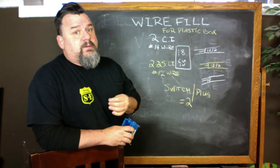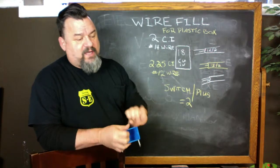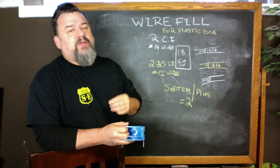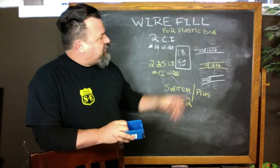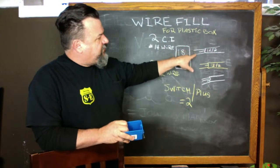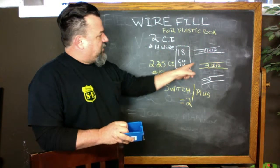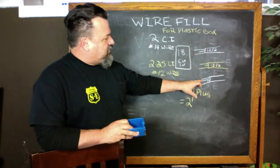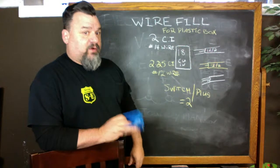With the grounds, they all count as one, regardless of how many there are in there. They all tie together. They're not current carrying conductors. So that's why they're only counted as one. That's just how they do it. So we've got two, four, because they're two cubic inches, two and a quarter, six, eight and a half, 10, 12, 14 and a half, plus the grounds, 15 and a half.